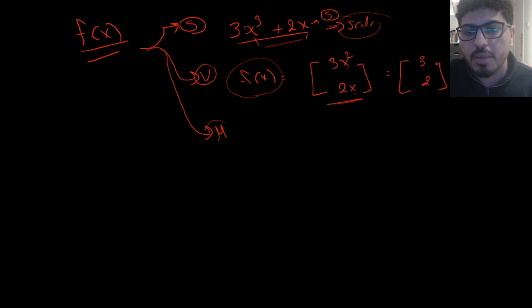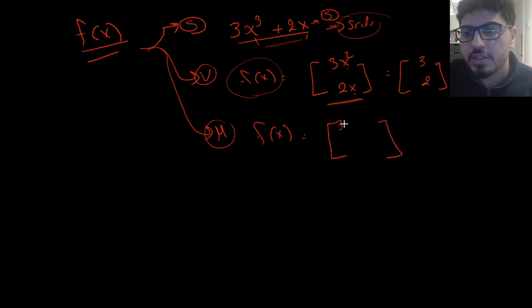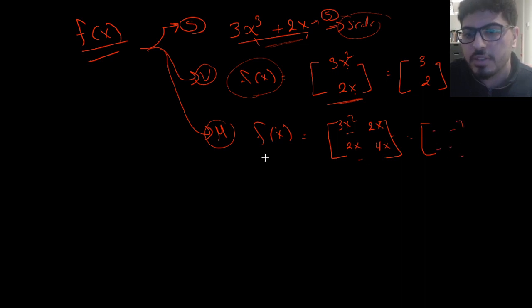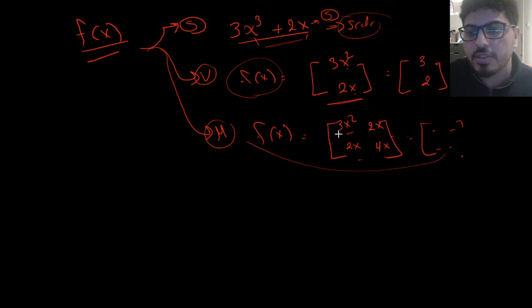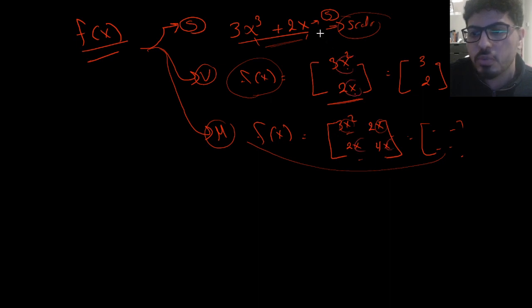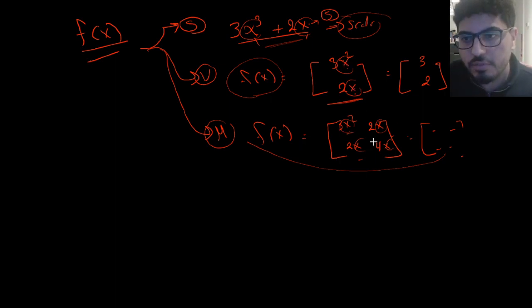Likewise, f of x could also be a matrix-valued function. A matrix-valued function f of x is a function that returns a matrix for each value of x — for example, [[3x squared, 2x], [2x, 4x]]. So for each value of x, we will return a different matrix. It's a matrix-valued function of a single variable. In all of these cases, we discussed scalar-valued, vector-valued, and matrix-valued functions of a single variable.